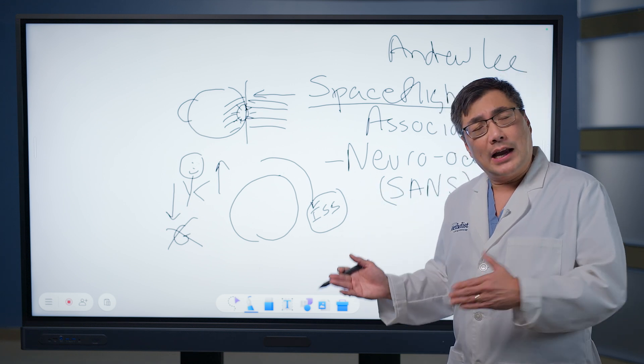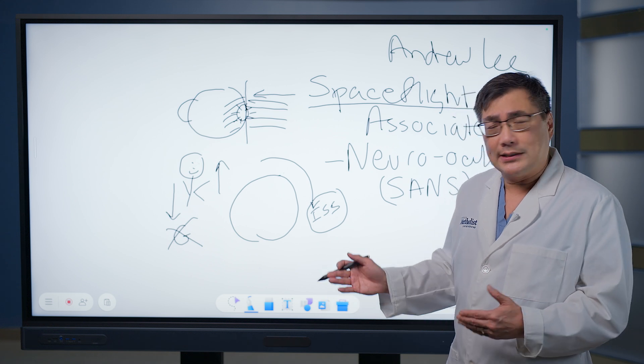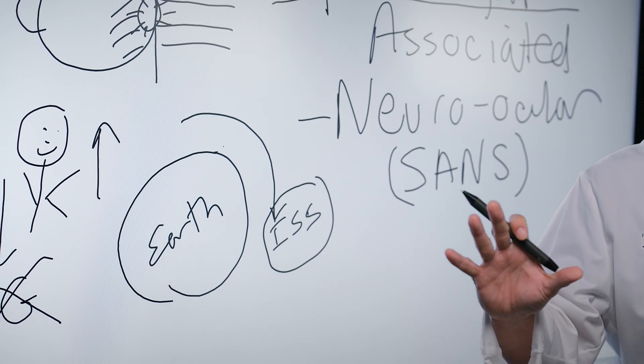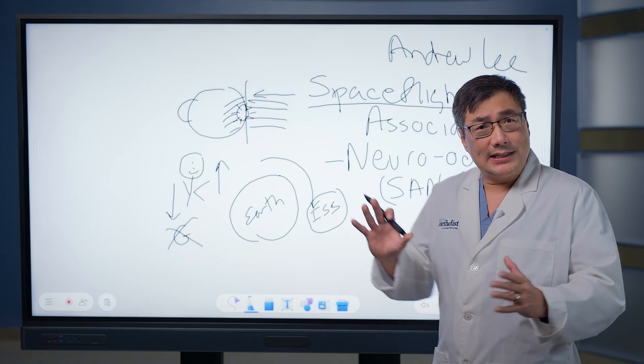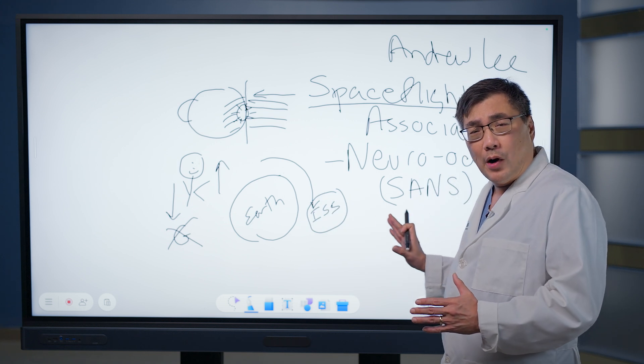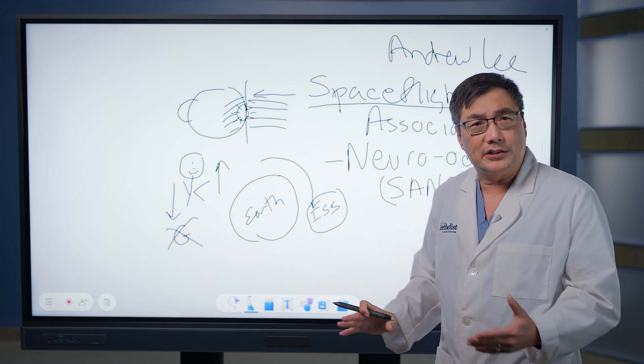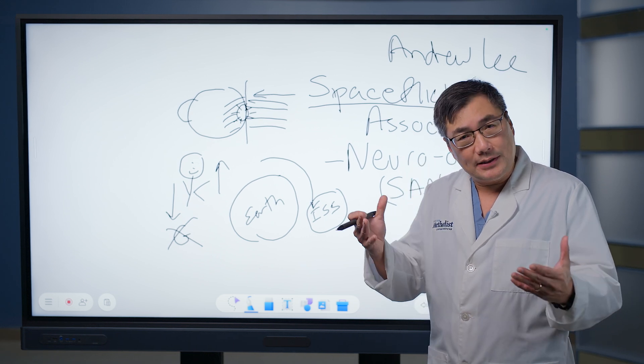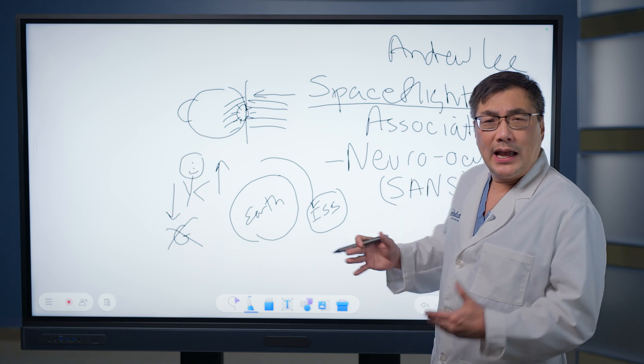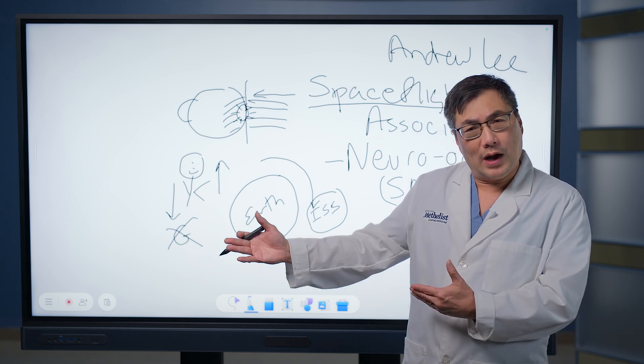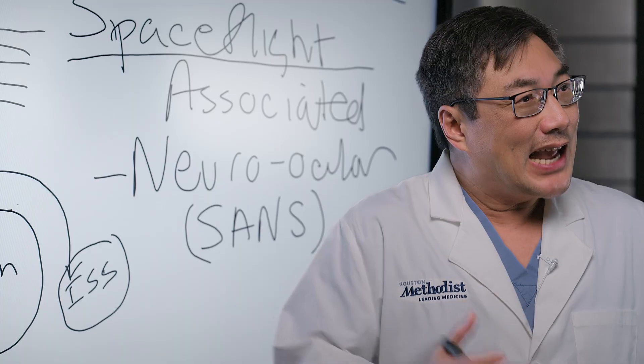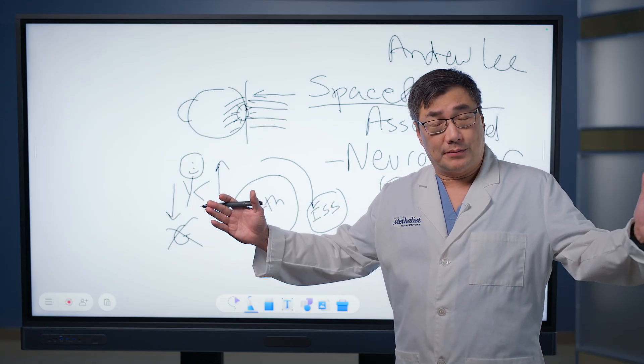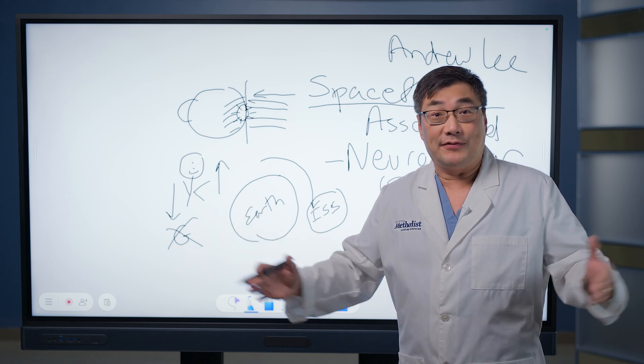Another side benefit of studying SANS is addressing the communication challenge: the distance between Earth and Mars creates about a 20-minute delay in the time signal - 20 minutes each way. Developing technologies that can measure the eye in space, determine whether people have SANS, and provide real-time answers to our astronauts while they're flying is going to be a very important telemedicine aspect of studying SANS. It'll be the longest-distance telemedicine project ever done in the history of our solar system.